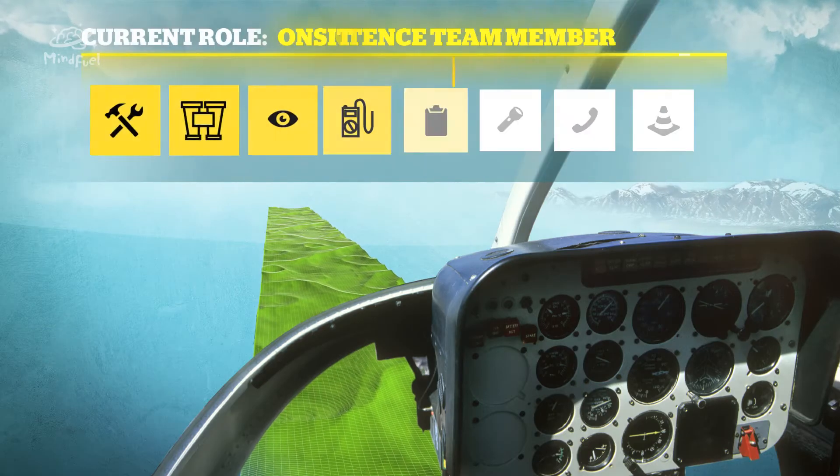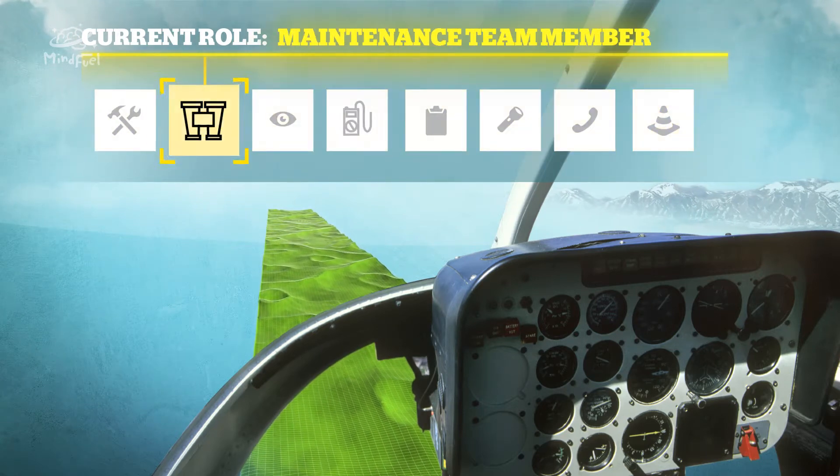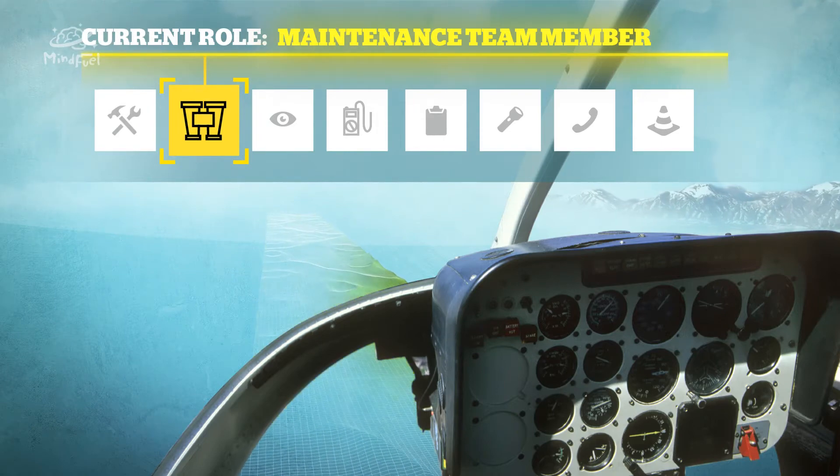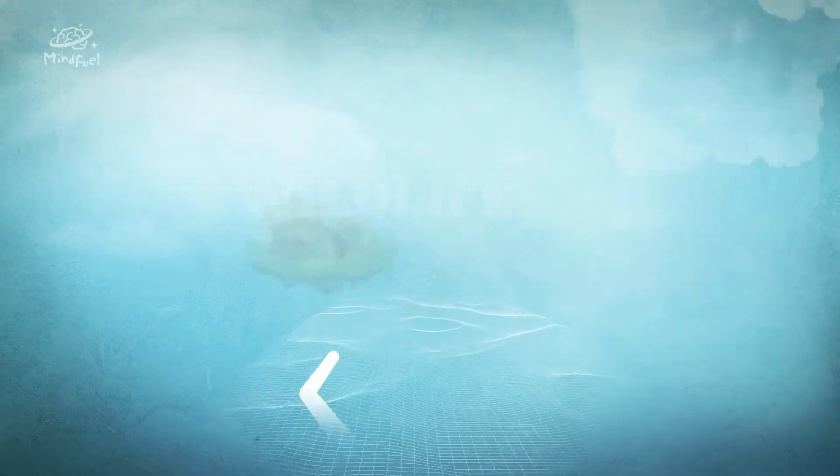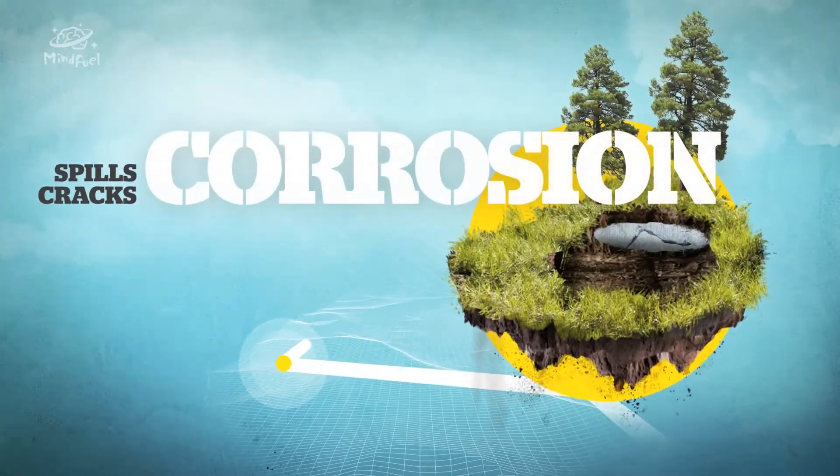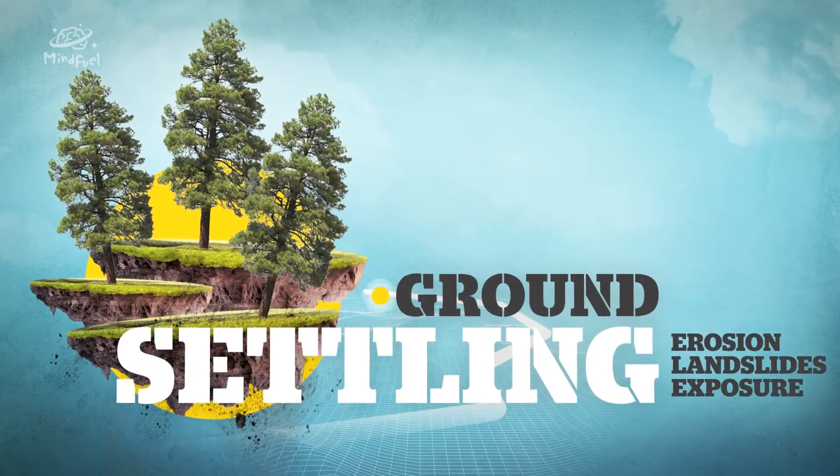We're on our way to check some readings at a valve site. As an electrical technologist, I do a lot of different things when I'm out on the job, even helping out as a maintenance team member. Today, we're surveying the pipeline path for unusual activity. We look for wildlife, signs of corrosion, or ground settling, which could expose pipe. If we spot anything out of the ordinary, we check it out and fix the problem.